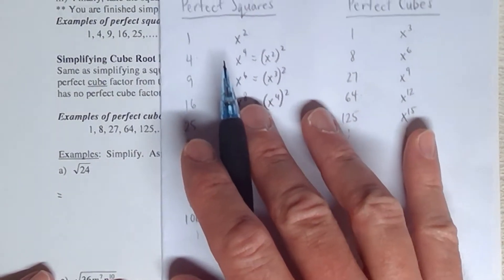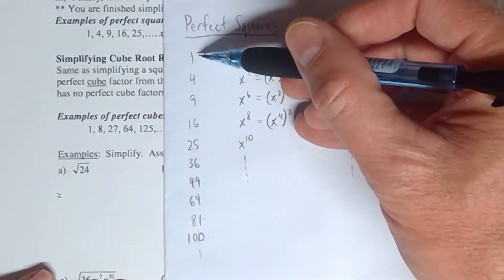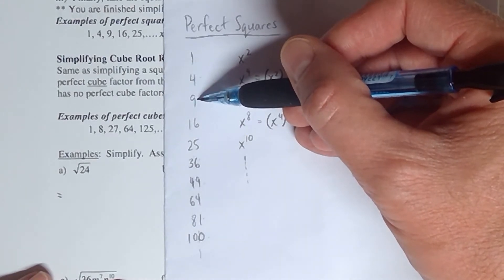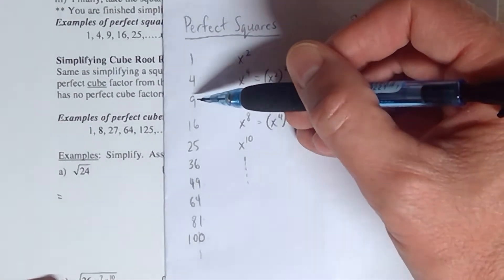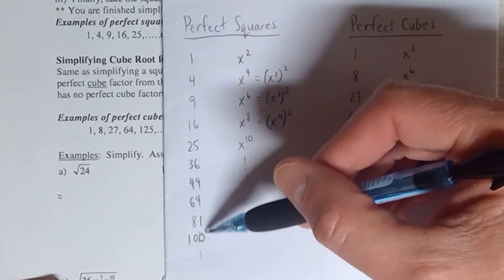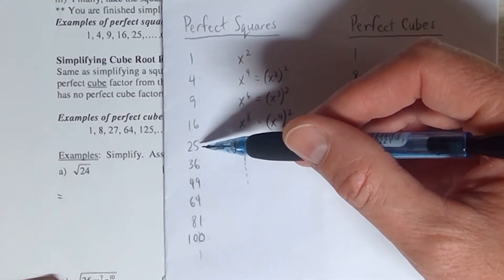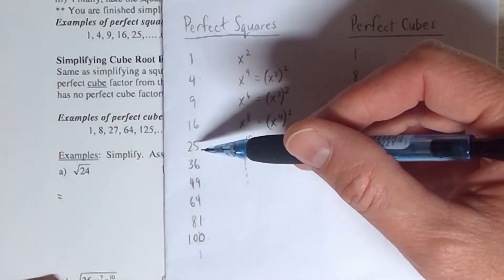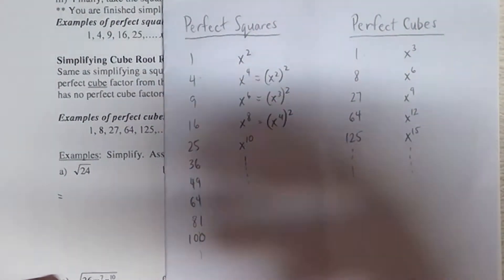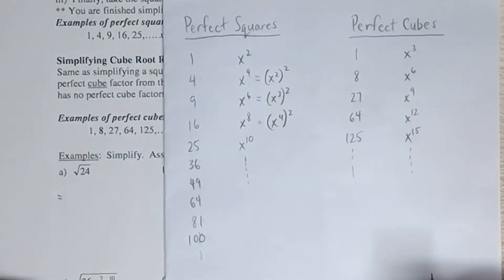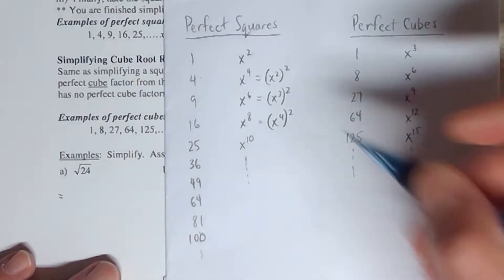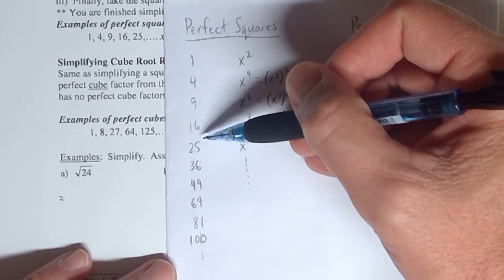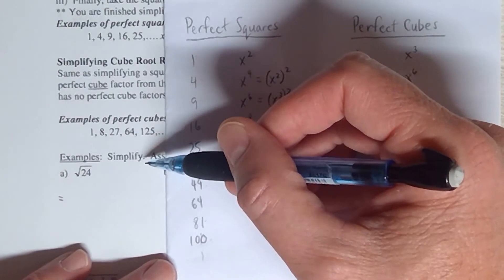What they want you to do is take 24 and factor out one of the perfect square numbers from the list. As you know, 9 is not a factor of 24. If you listed out all the factors of 24, 9 would not be one of them. Same thing with 16, and any number bigger than 24 cannot be a factor of 24. The factors of 24 are: 1 and 24, 2 and 12, 3 and 8, 4 and 6.